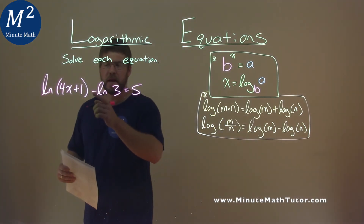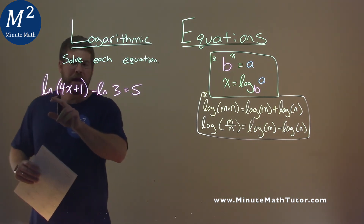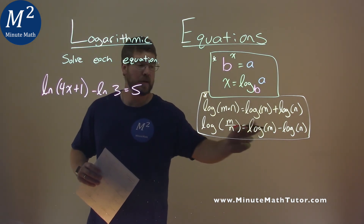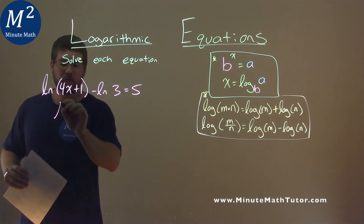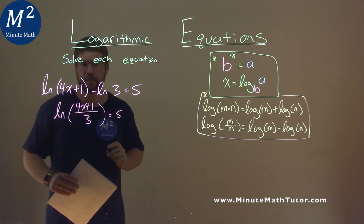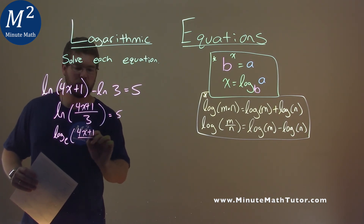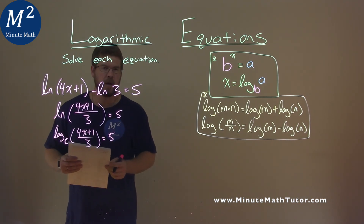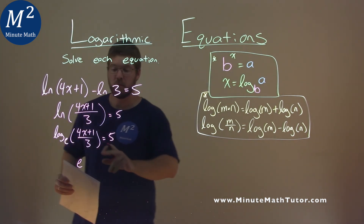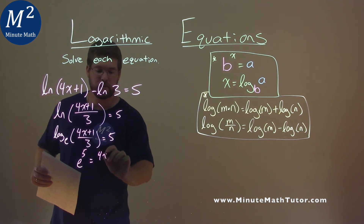We're given this problem: natural log of 4x plus 1 minus natural log of 3, equals 5, and we're going to solve this equation. Natural log is the same as log base e. Our formula says we can combine it to be one logarithm — just divide the insides. So we rewrite this as natural log of 4x plus 1 over 3, equal to 5. That's log base e of 4x plus 1 over 3, equal to 5. Our base is e, and we raise it to the fifth power, equal to the a value: 4x plus 1 over 3.